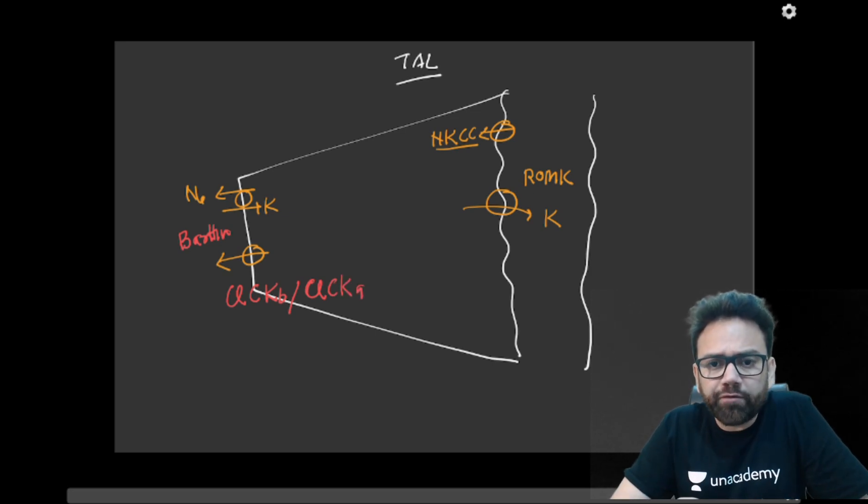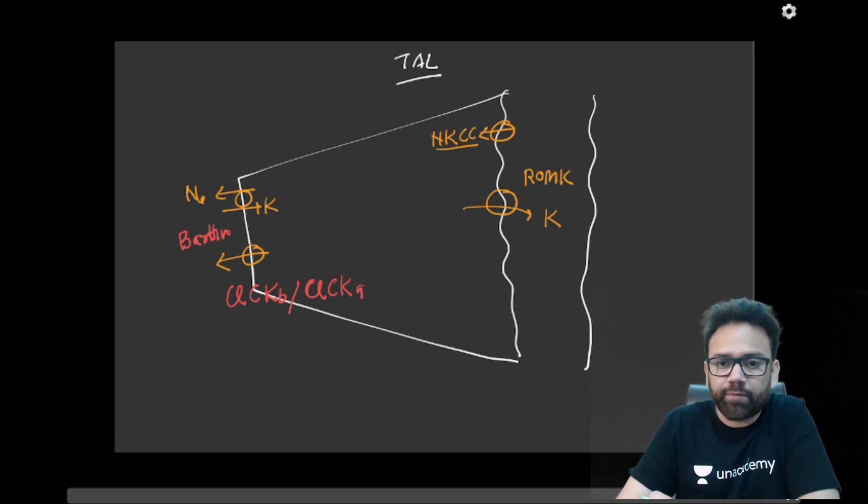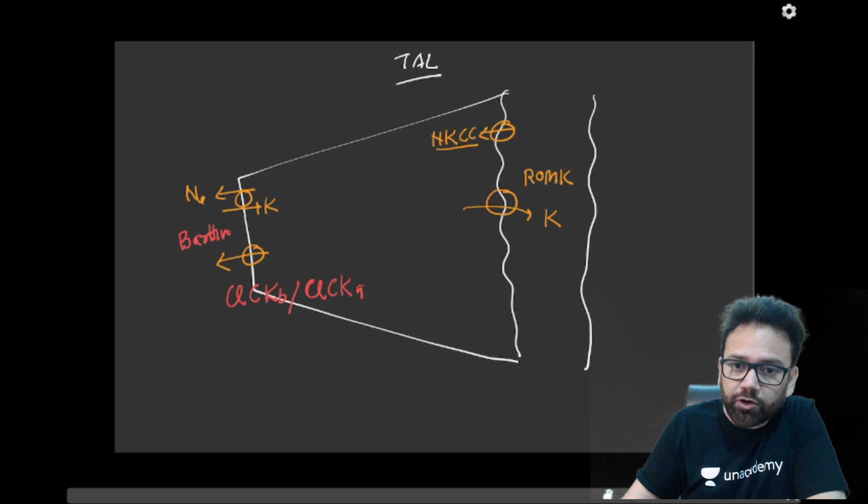So if there is mutation of these pumps or channels, there can be Bartter syndrome. And they are of various type. Like for example, if there is mutation of NKCC channel, it can cause type 1 Bartter syndrome.